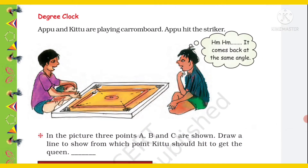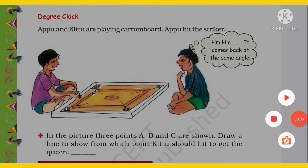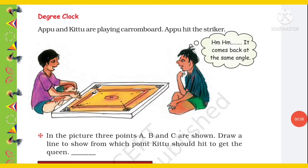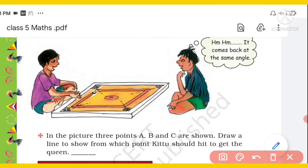Appo and Kittu are playing carom board. Appo hit the striker. What are you doing? Carom board playing. You would also like to play carom board, right? So what is he saying? It comes back at the same angle. He says, how did it come from the same angle? He is thinking.